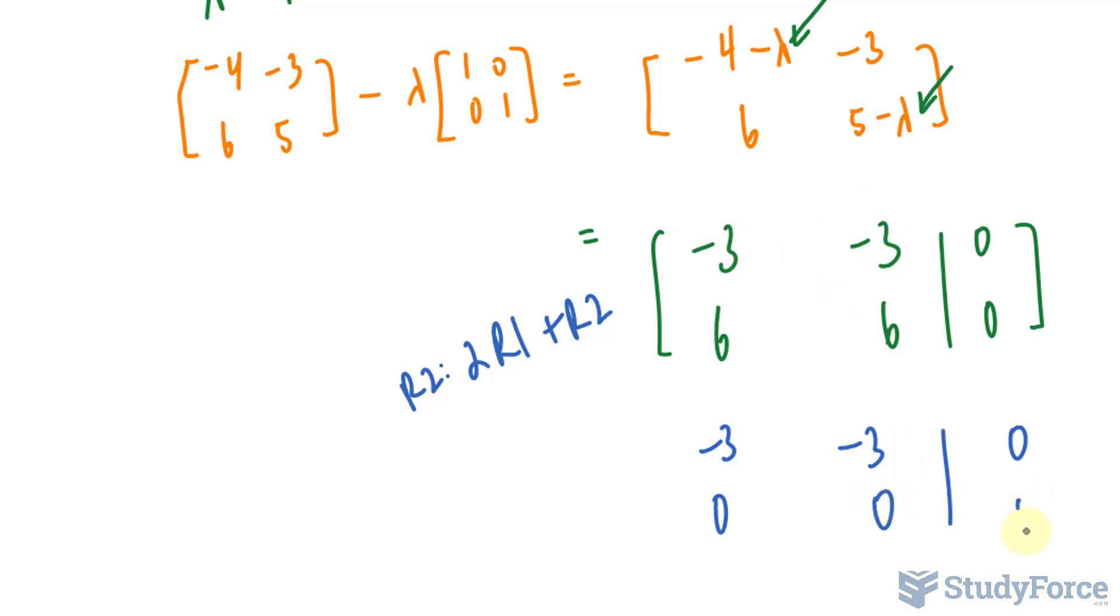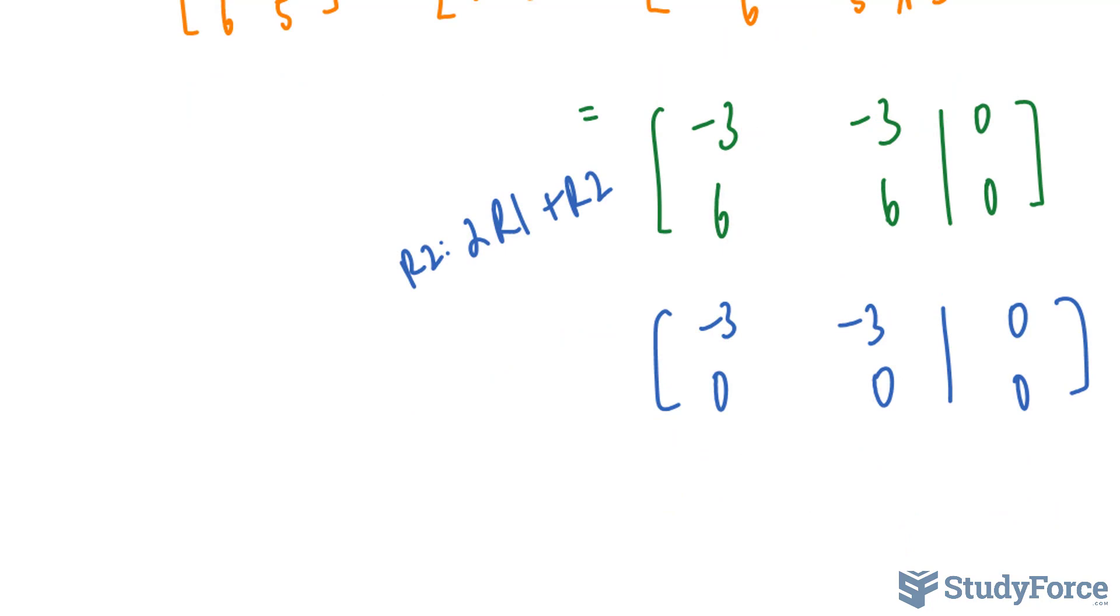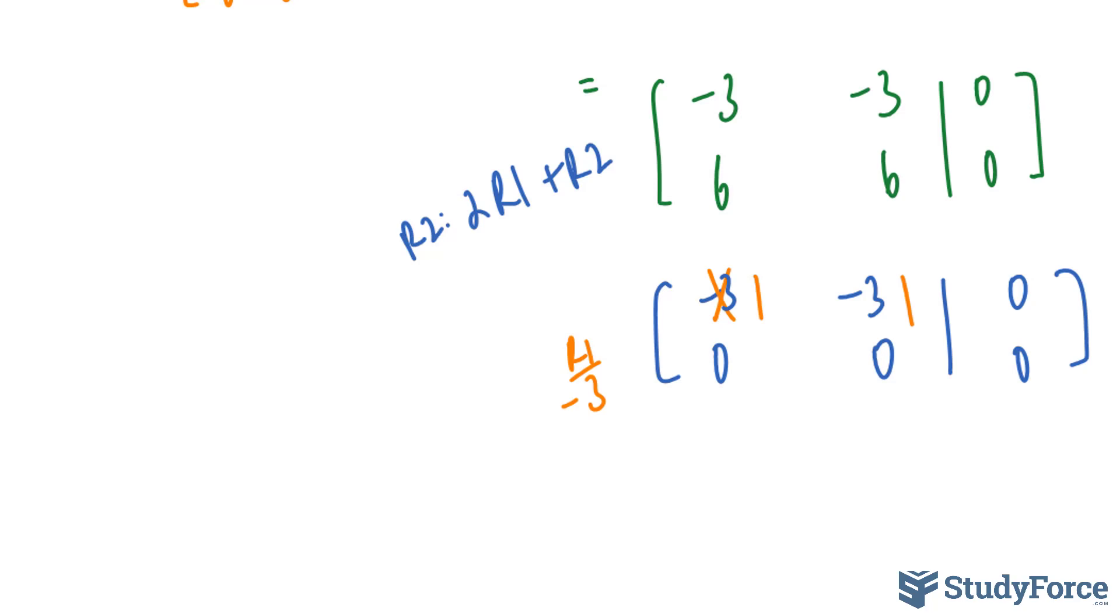Obviously, this number and this number are the same, so I should get 0 and 0. If I divide every element in row 1 by negative 3, that becomes 1, 1, and 0. The first column has a leading 1, but the second column does not have a leading 1, so I'll set the second column, which I'll call x sub 2, as a parameter t.